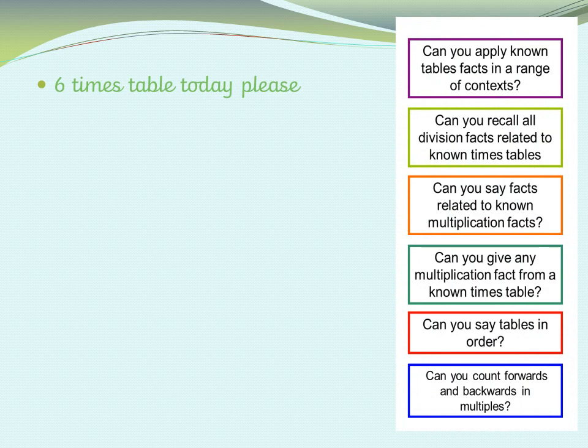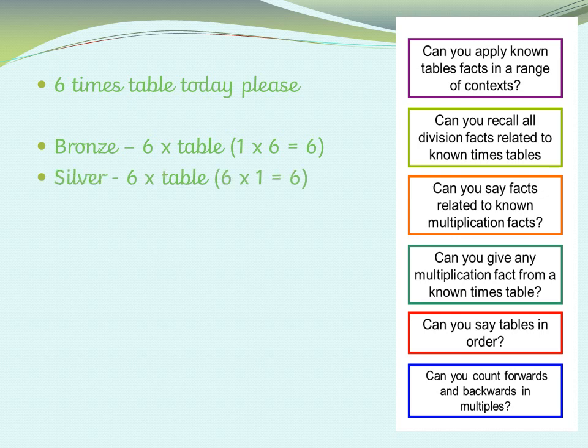As always we're going to start with some times tables and it's the 6 times table today. So the bronze award goes to those who manage to do 1 times 6 is 6, 2 times 6, etc. Then move on to the silver, which is the same but using our commutativity — written as 6 times 1 is 6, 6 times 2, etc. The gold is the inverse: 6 divided by 6 is 1, 12 divided by 6 is 2.